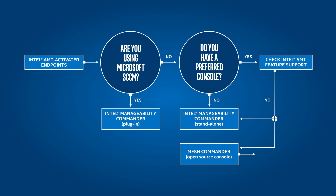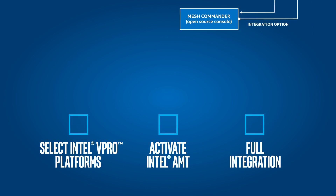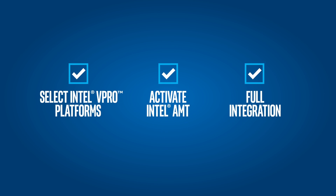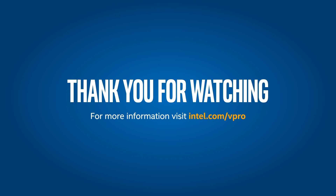In conclusion, successful vPro platform deployments require selecting the right hardware, activating Intel AMT, and fully integrating computing endpoints into your corporate environment. For more information on the Intel vPro platform and how to use its capabilities, please visit intel.com/vPro. Thank you for watching.